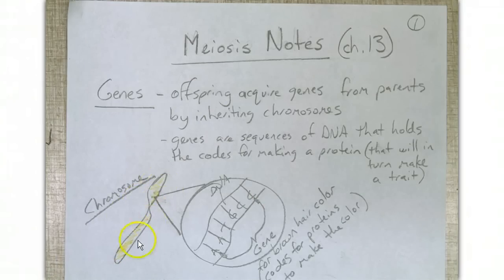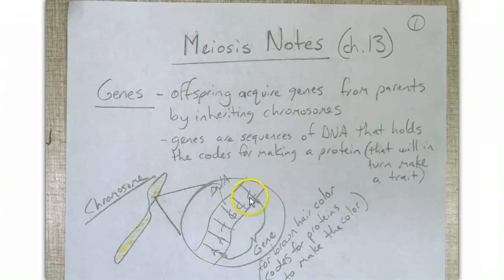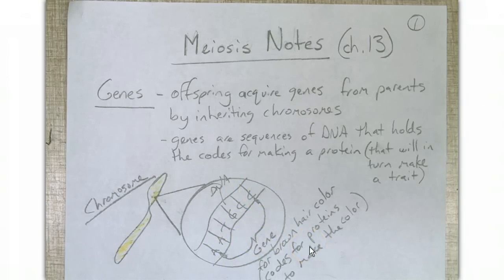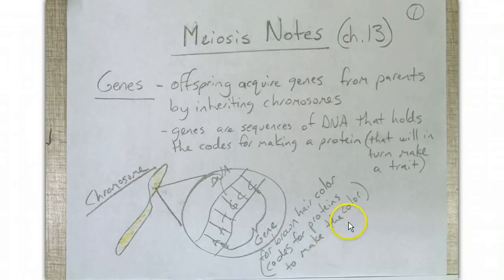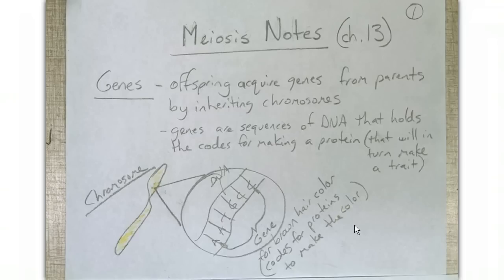Let's put down a chromosome. A chromosome is just DNA wrapped around histone proteins, kind of highly coiled. We have our DNA molecule — sequences of adenines, thymines, guanines, and cytosines. Those are the names of the bases that spell out the alphabet of the genetic language that we all carry. A sequence of DNA is called a gene. For example, this might be the gene for brown hair color, which codes for the proteins to make the color of your hair brown. You can also have a gene for blonde hair, red hair, or any other color.